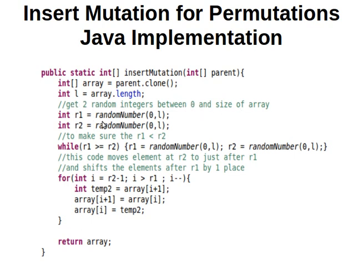Two random indices r1 and r2. I have a method here called random number — it generates a random integer between zero and l minus one, so l is not inclusive, from zero to l minus one. Then here I have a while loop just to make sure that r1 is less than r2.